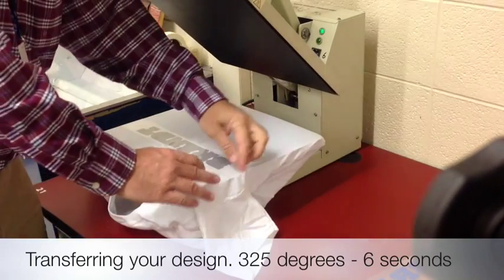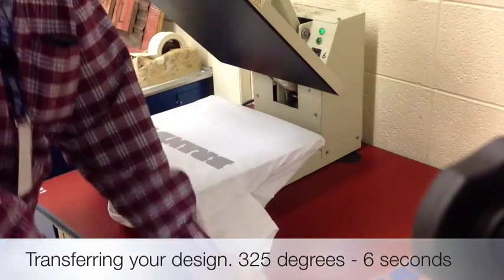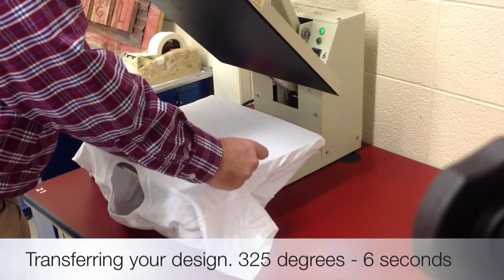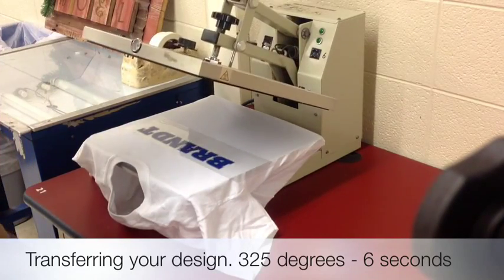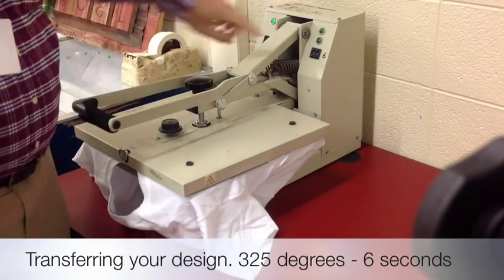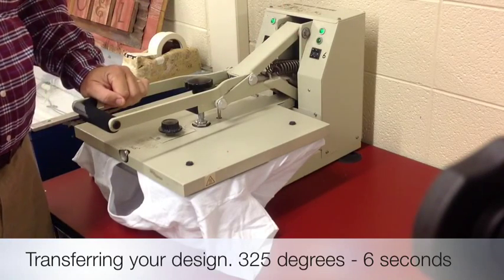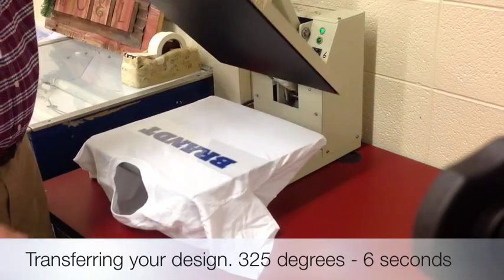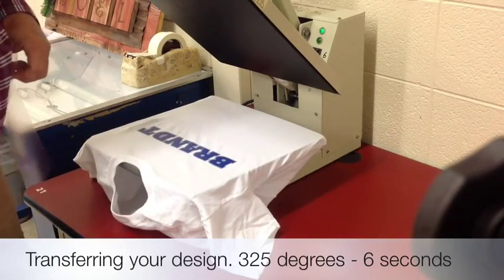Once your design is transferred, you can simply peel the plastic and keep your design in place. Take the second color, line it up properly with the first, place it into position and then transfer that for 6 seconds. Your timer is set here at 6 and your press will time it. Once it's complete, you can peel and you can see you have your finished design.